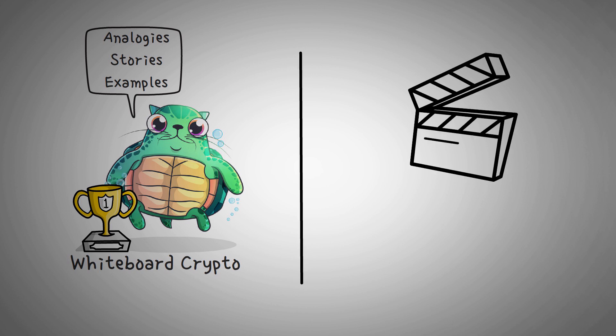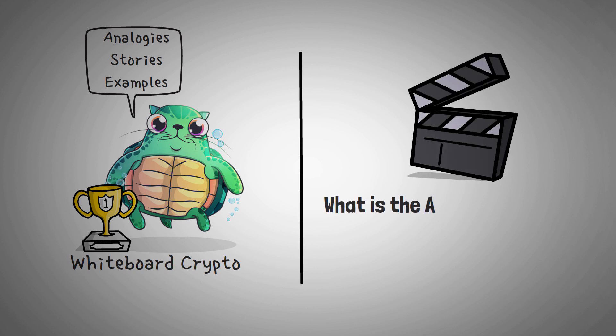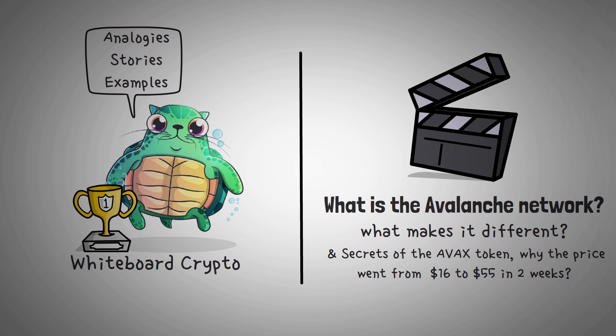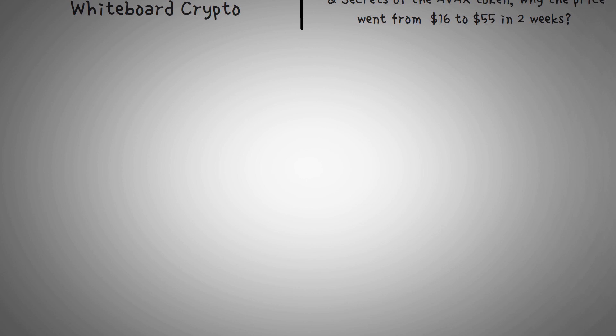In this video, we are going to explain what the Avalanche network is, what makes it different than literally any other crypto application I've seen, and at the end, you'll learn the secrets of the AVAX token, including exactly why the price recently went from $16 to $55 in two weeks. Let's dig in.